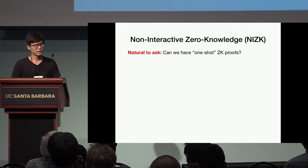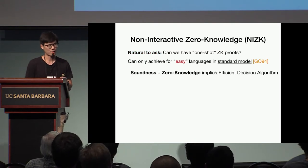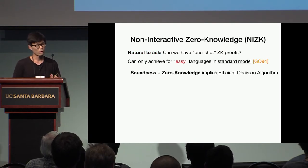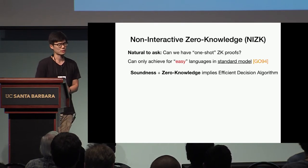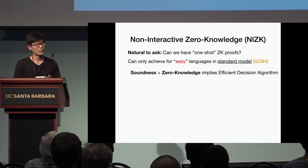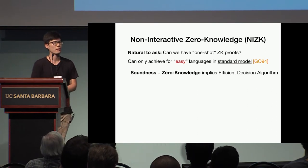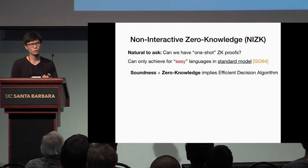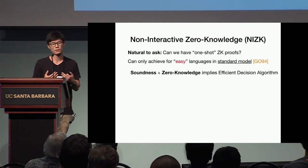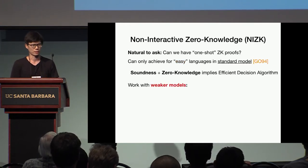What do we know about NIZK? Do we know that they even exist? It turns out that in the standard model or plain model, we can only hope to achieve NIZK for very easy classes of languages. This is because the two properties of soundness and zero-knowledge together imply an efficient decision algorithm for the underlying language, so we can't really hope to construct NIZK for any interesting classes of languages.